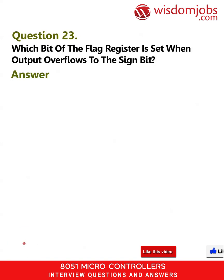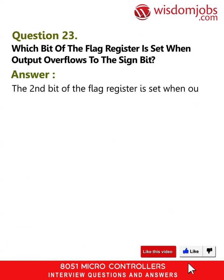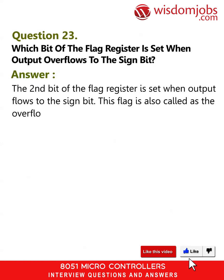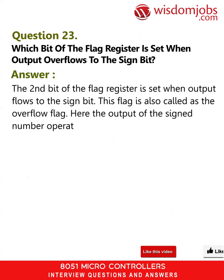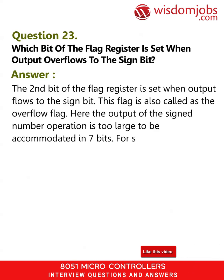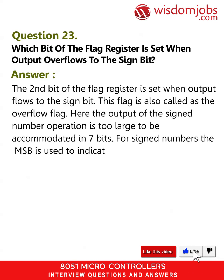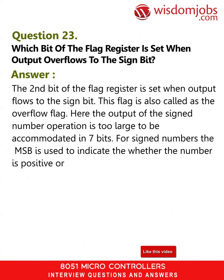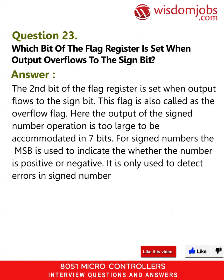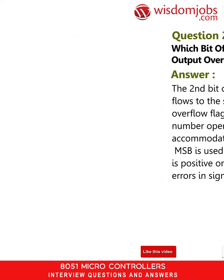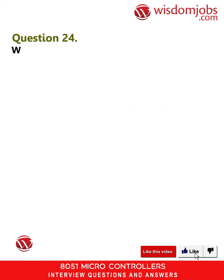One is a user-definable bit and PSW.5 can be used as a general-purpose bit. The rest of the flags indicate some condition of an arithmetic operation. Question 23: Which bit of the flag register is set when output overflows to the sign bit? Answer: The second bit of the flag register is set when output overflows to the sign bit. This flag is also called the overflow flag. The output of the sign number operation is too large to be accommodated in seven bits.